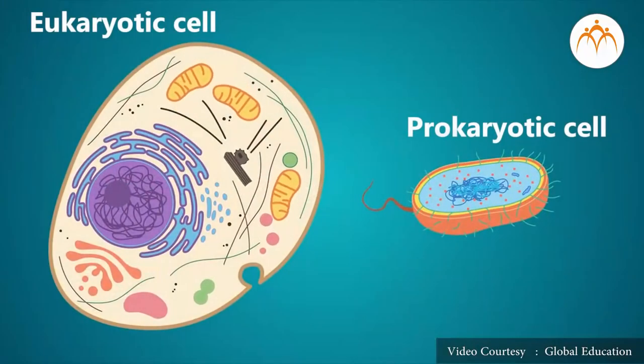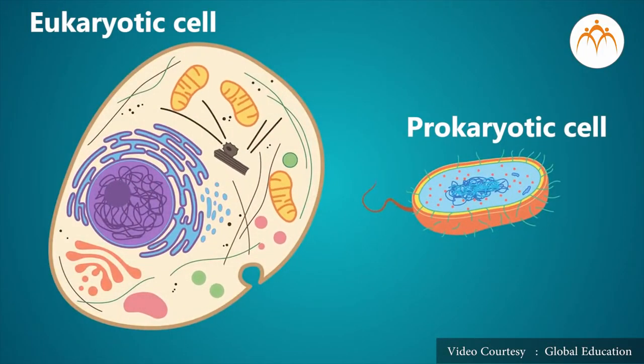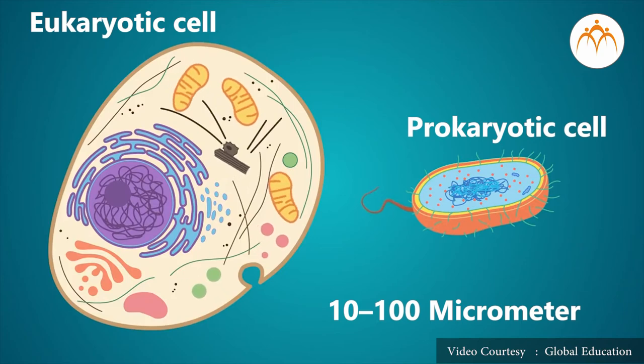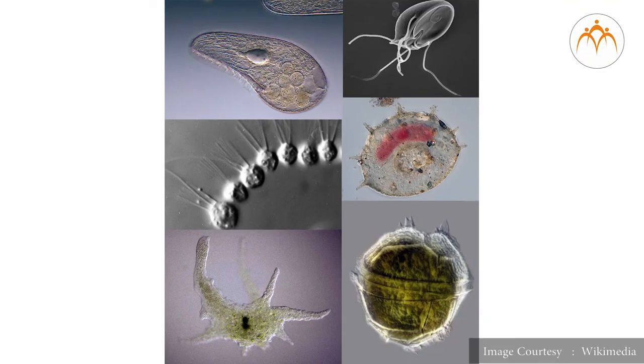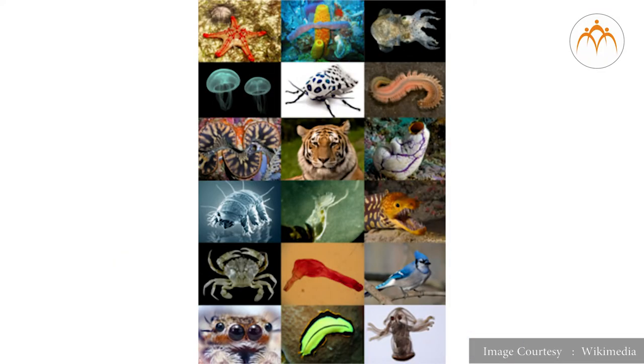Eukaryotic cells are significantly larger than prokaryotic cells which have diameters ranging from 10 to 100 micrometers. Organisms like protozoa, fungi, plants, and animals have eukaryotic cells. These organisms are called eukaryotes. Eukaryotes can be either unicellular or multicellular.